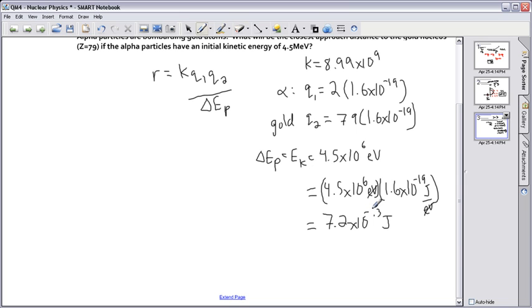So times 10 to the minus 13 joules. That's my delta EP. Well, now I'm in business. I have everything I need in order to do this. It's like my shopping list here. So I've got everything I need.